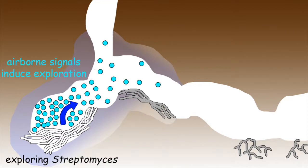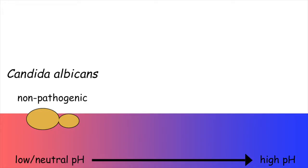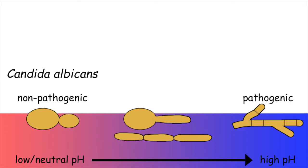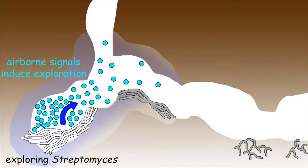This pH-responsive change in the behavior of Streptomyces colonies is reminiscent of the fungus Candida albicans, which switches from a non-pathogenic yeast form at lower neutral pH into a pathogenic filamentous form when the pH rises. The pH-altering TMA compound produced by exploring Streptomyces also has antimicrobial properties, and effectively inhibits the growth of other types of bacteria.